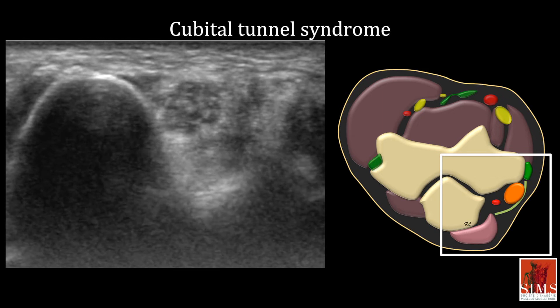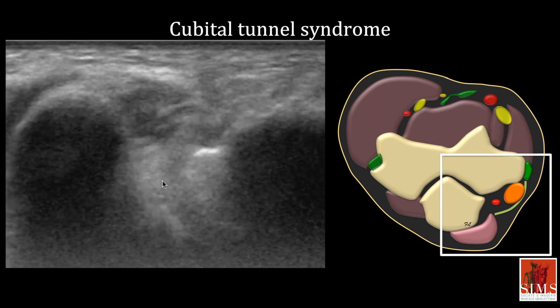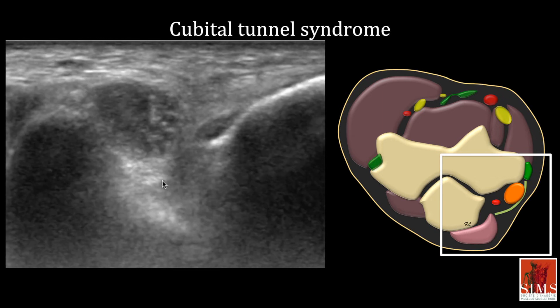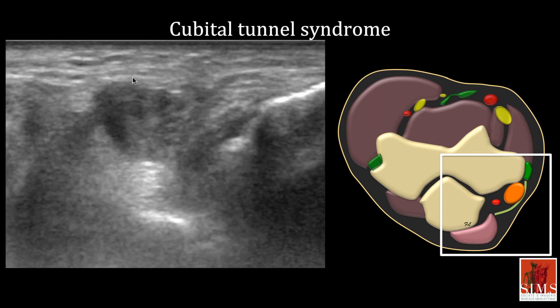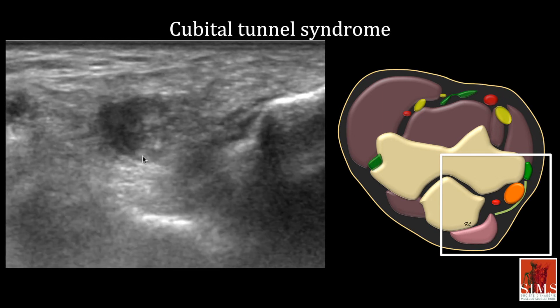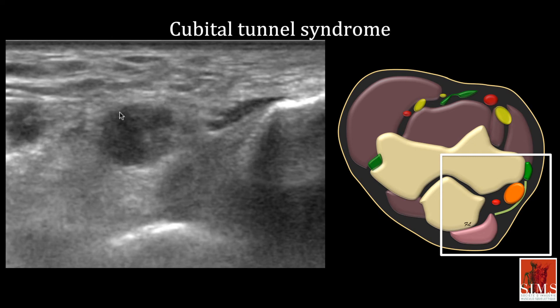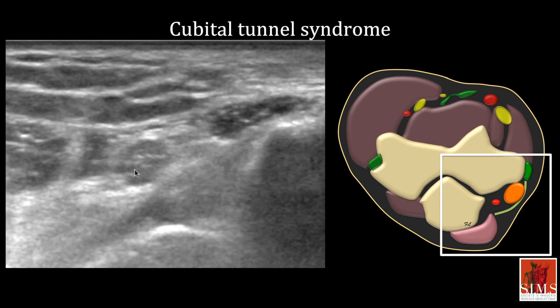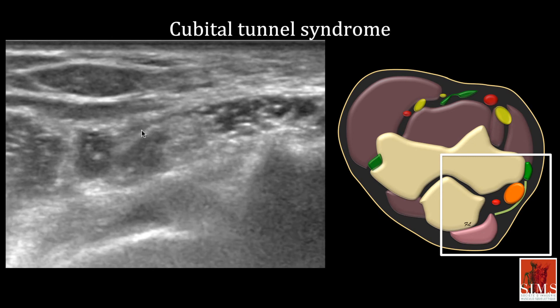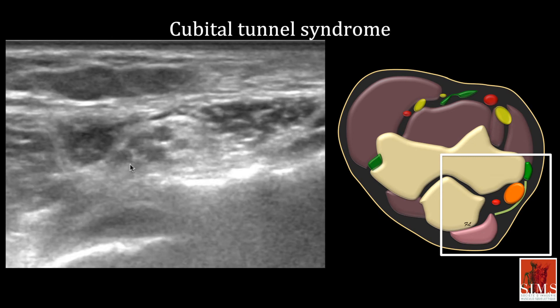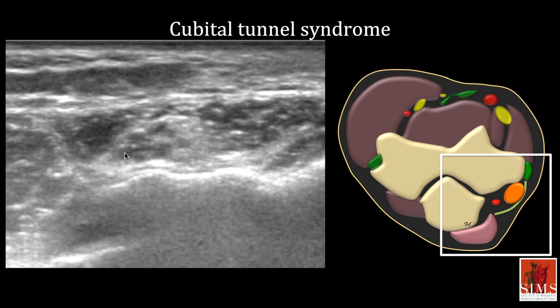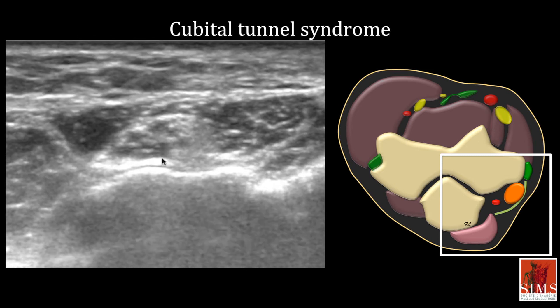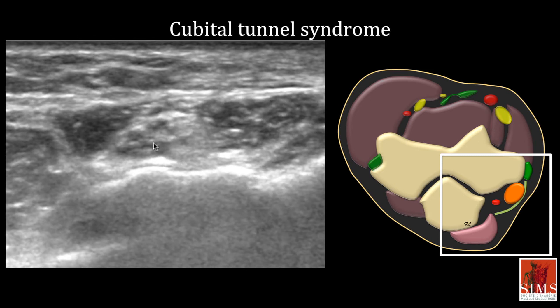Cubital tunnel syndrome is the second most common nerve compression syndrome in the upper limb. Here we see a cross section of a very rounded, very thickened ulnar nerve having lost its cord-like structure, which then regains its normal surface distally.